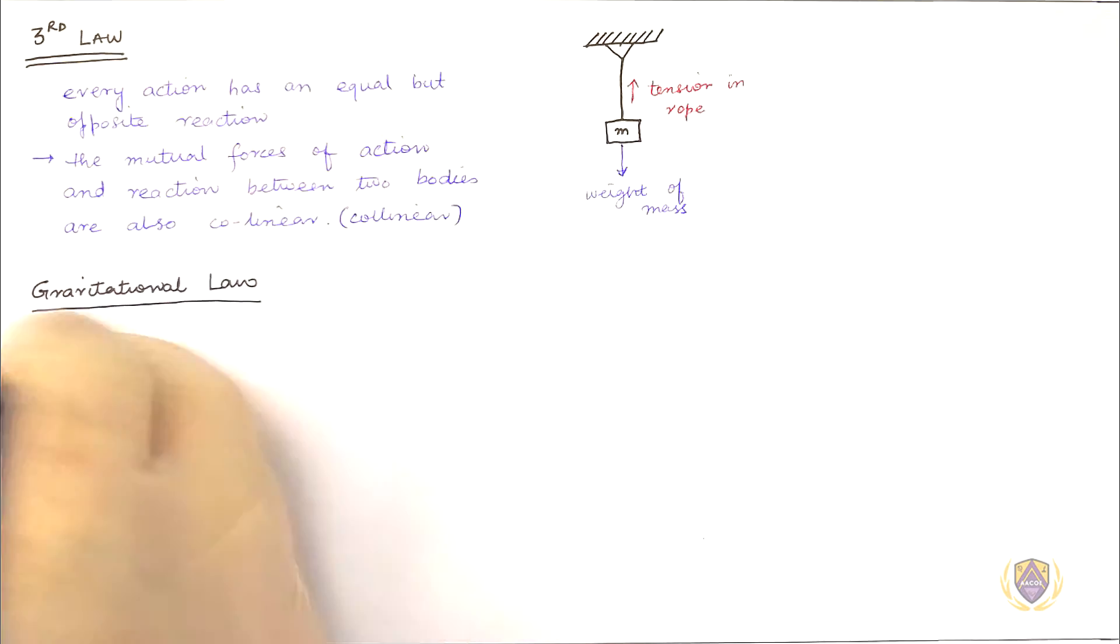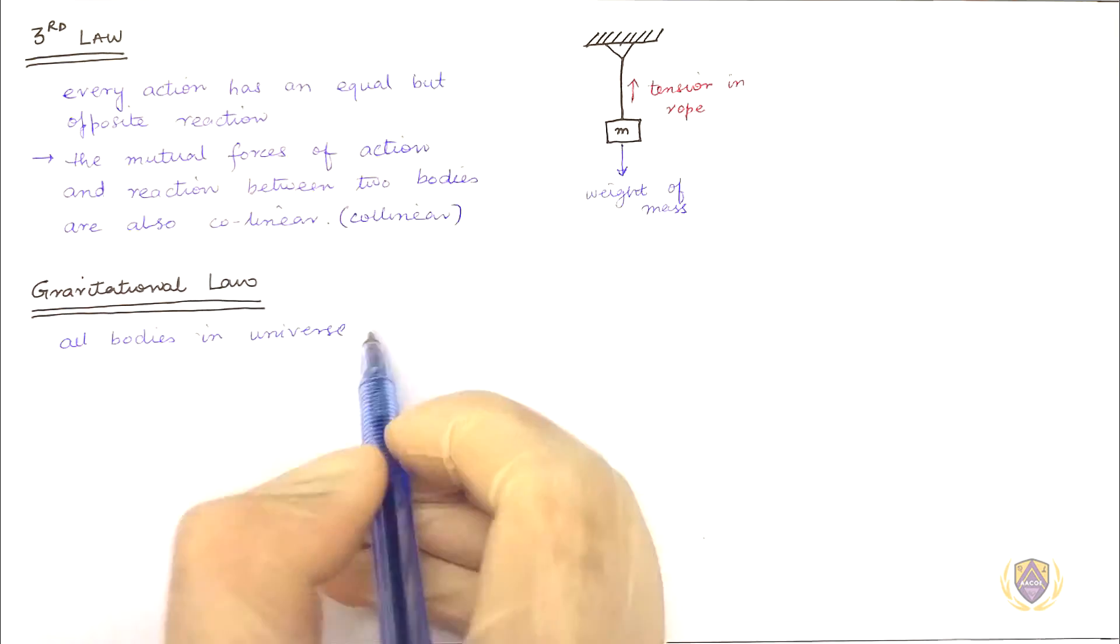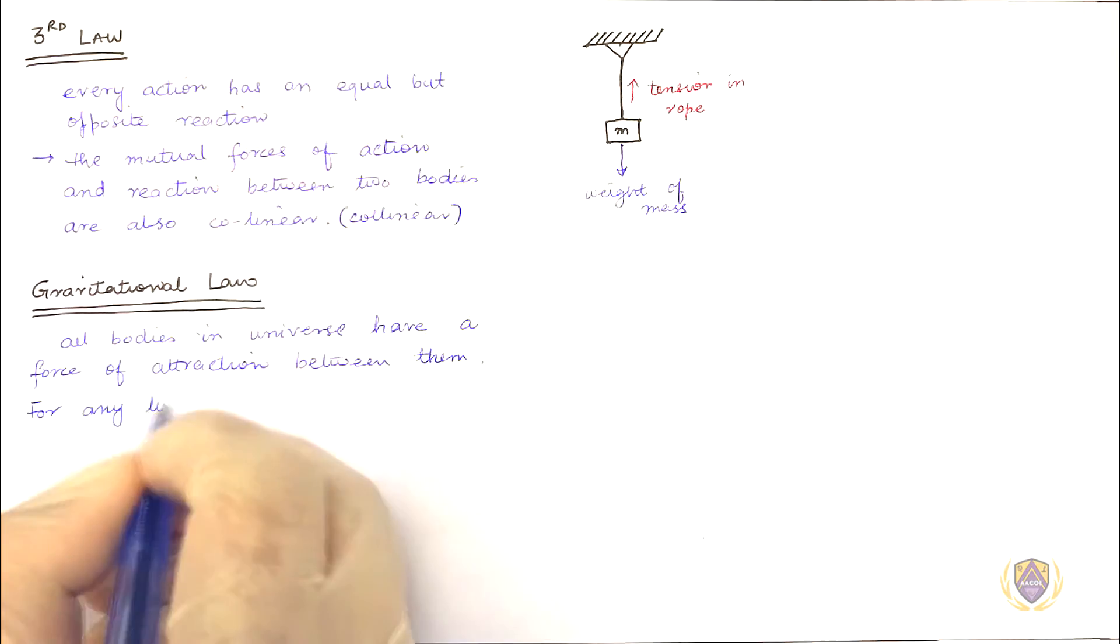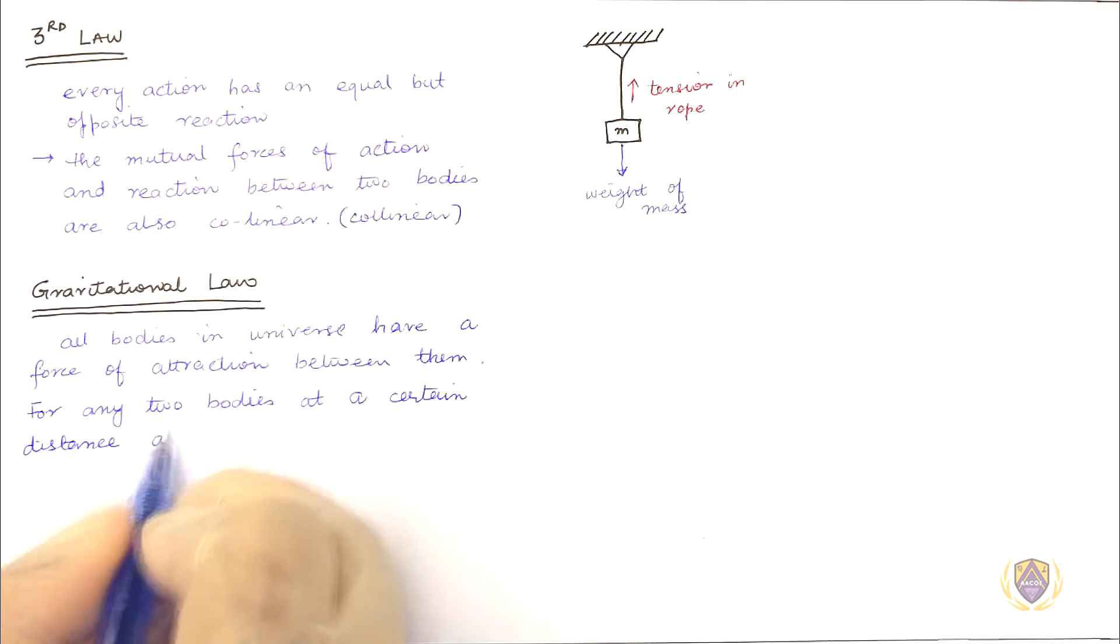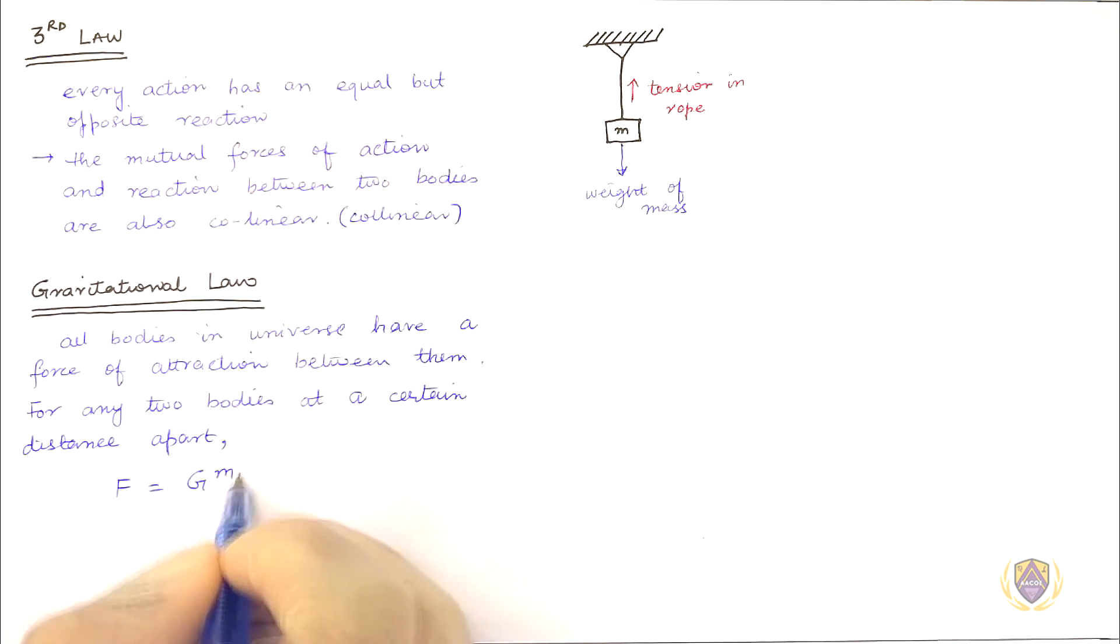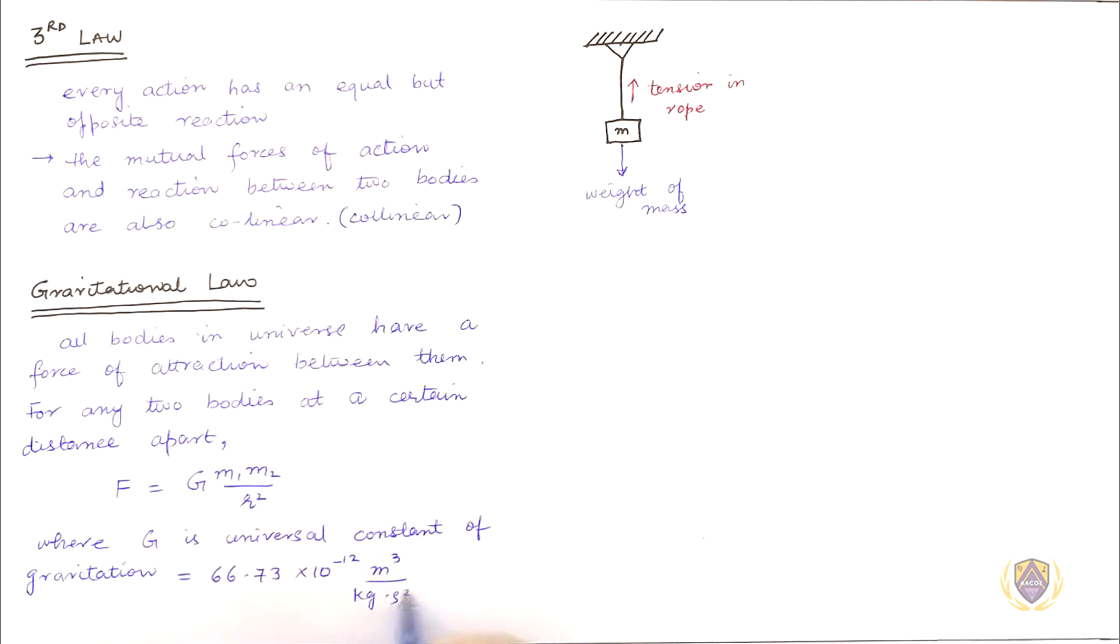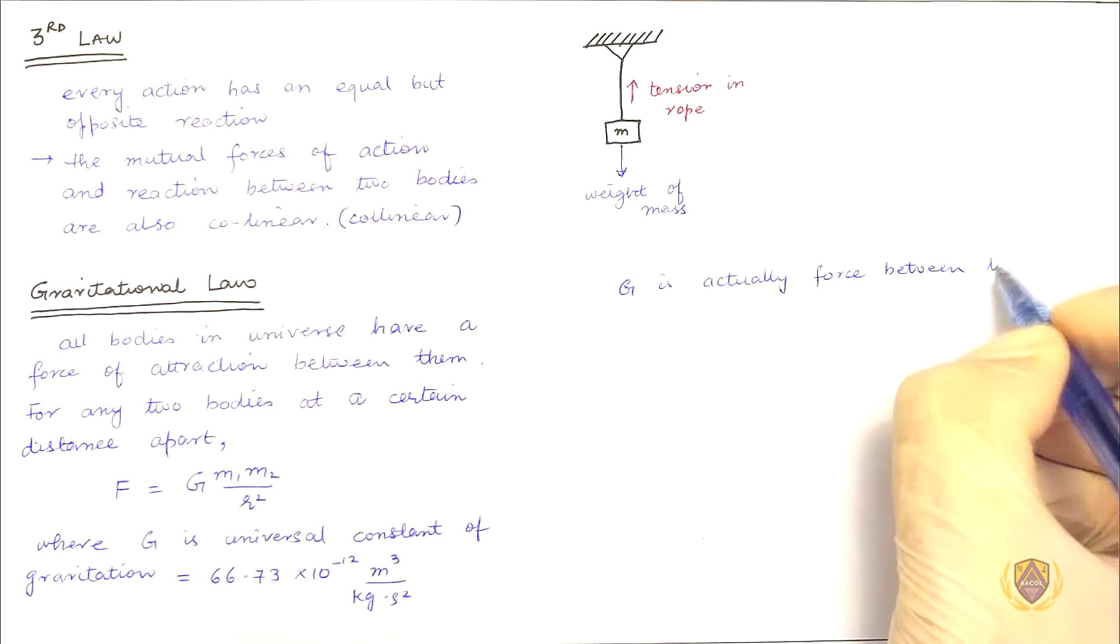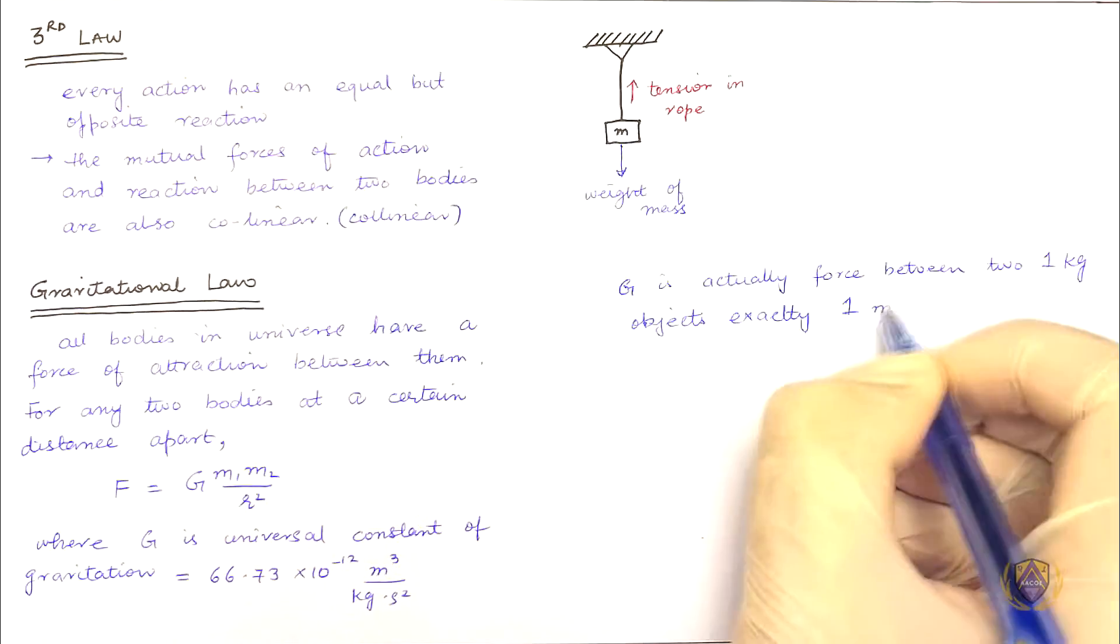Gravitational Law: All bodies in universe have forces of attraction between them. For any two bodies at a certain distance apart, Force equal to G M 1 M 2 over R square, where G is universal constant of gravitation. Physically G is force between two 1 kilogram objects exactly 1 M apart.